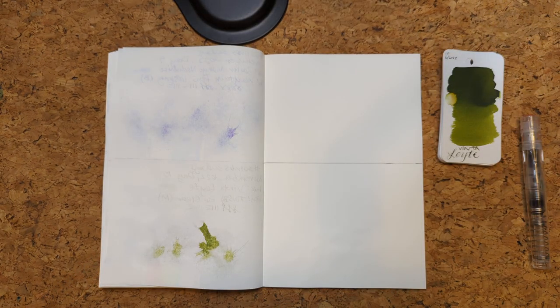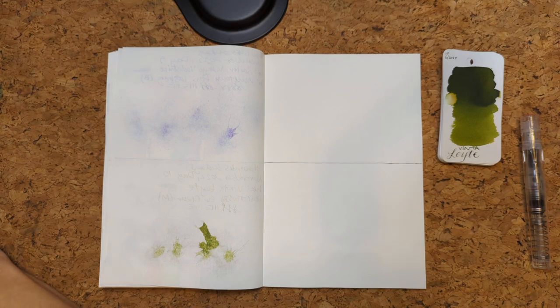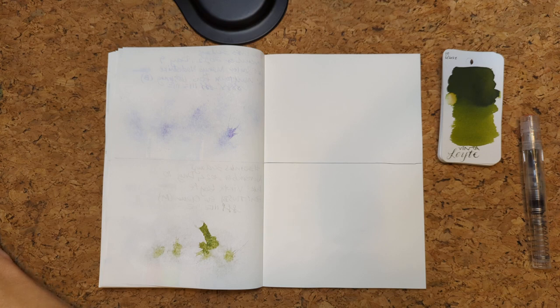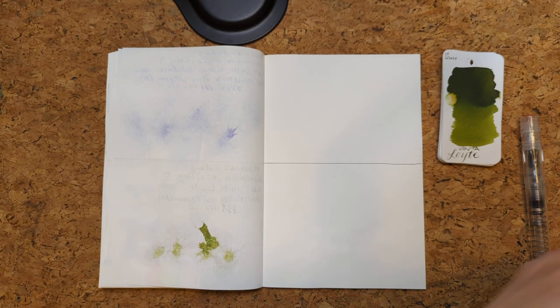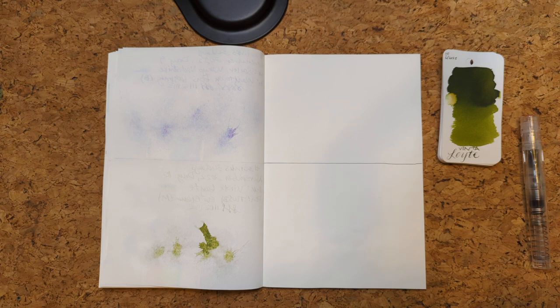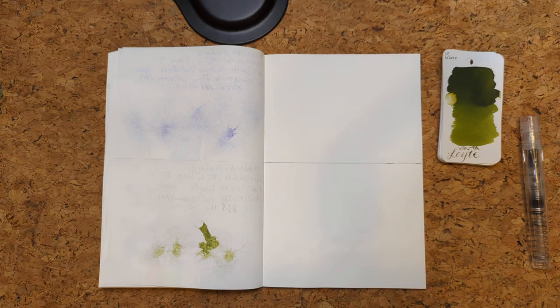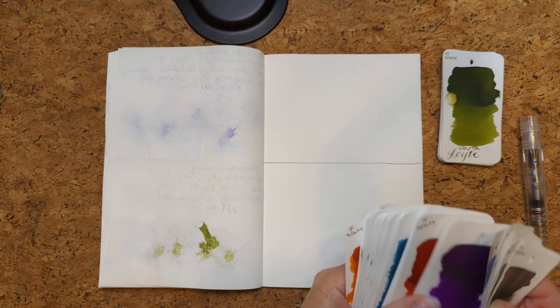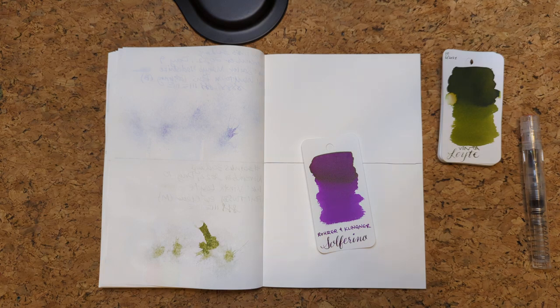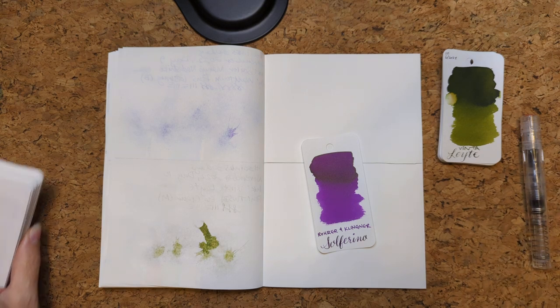So we got our random generator here and oh it's telling me number two. Oh exciting. So our ink for today, oh it's one that I just am so great at pronouncing correctly. Our ink is Solferino by Rohrer and Klingner.